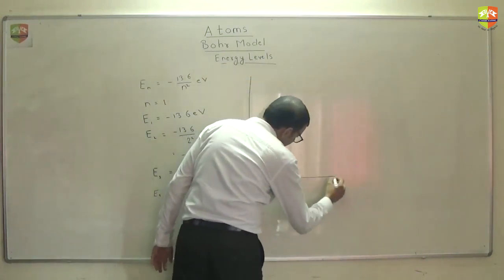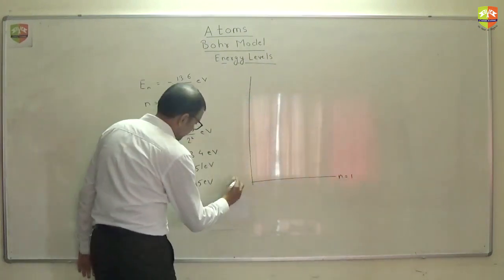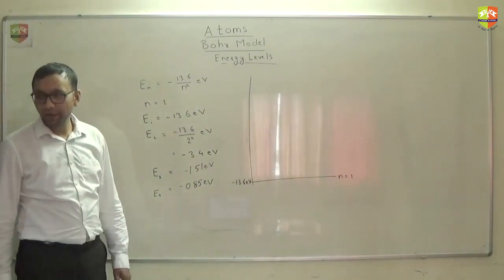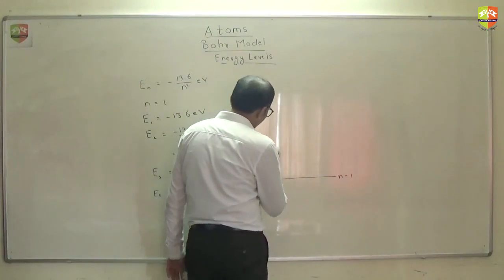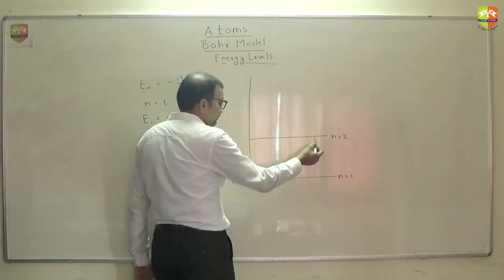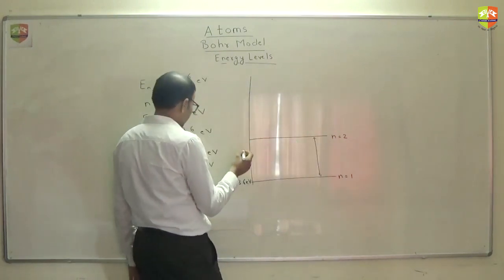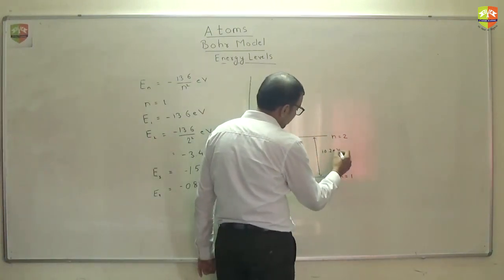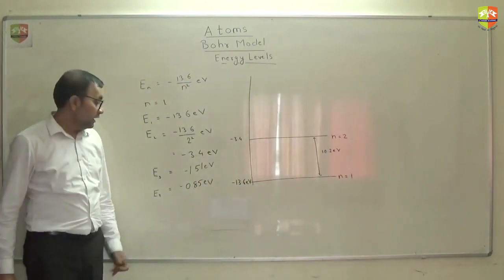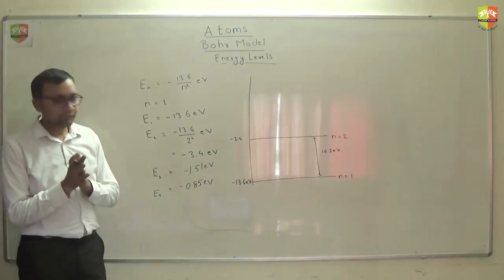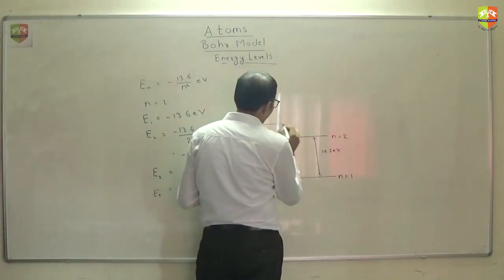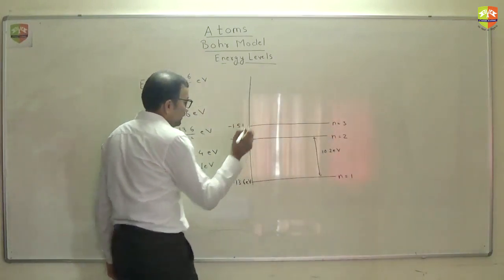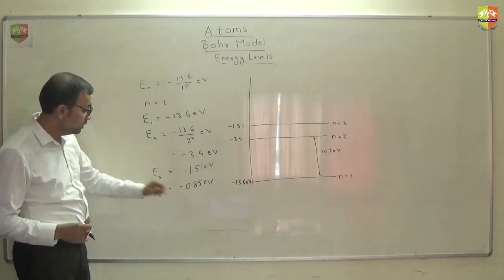You will have least possible energy for n equal to 1 which is minus of 13.6 electron volt. Then you have for n equal to 2. You will see that there is a big gap between n equal to 1 and n equal to 2 energy. This is minus 3.4. How much is this gap? 10.2 electron volt. Next energy level is minus 1.5. So energy level, this is n equal to 3. That is minus 1.51. Next is minus 0.85.